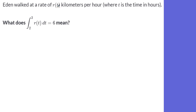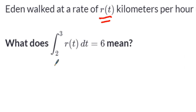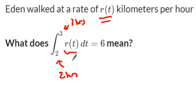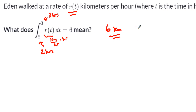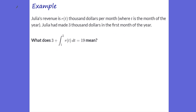Eden was walking toward Adam at a velocity of r(t) kilometers per hour, where t is in hours. The integral from 2 to 3 of the velocity with respect to hours equals 6. That means she walked 6 kilometers between hours two and three. I don't know if she walked fast or slow at various moments, but the integral tells us she covered 6 kilometers from t equals 2 to t equals 3.